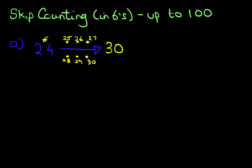So the number after 24, if we are counting in sixes, is 30. Now we're doing this at the moment with dots. Once you practice this and keep practicing it, you'll be able to learn these off by heart.